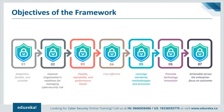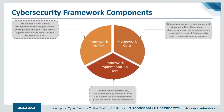The NIST cybersecurity framework consists of three main components: the Core, Implementation Tiers, and Profiles. The framework Core provides a set of desired cybersecurity activities and outcomes using common language that is easy to understand. The Core guides organizations in managing and reducing their cybersecurity risks in a way that complements an organization's existing cybersecurity and risk management processes.